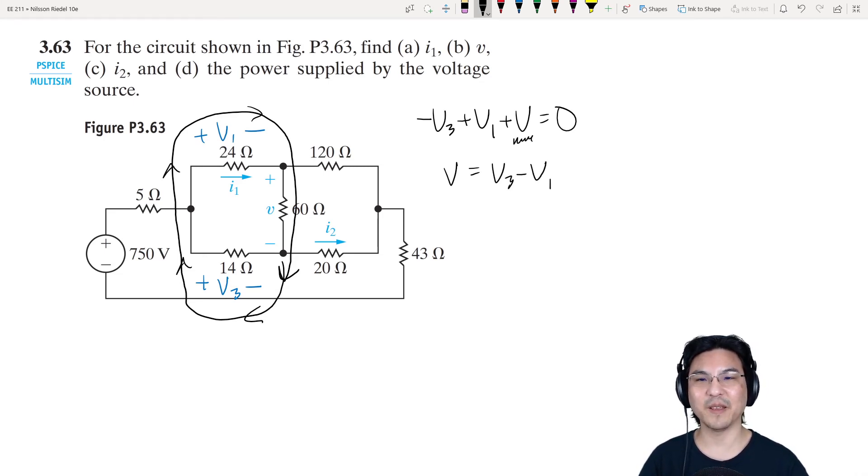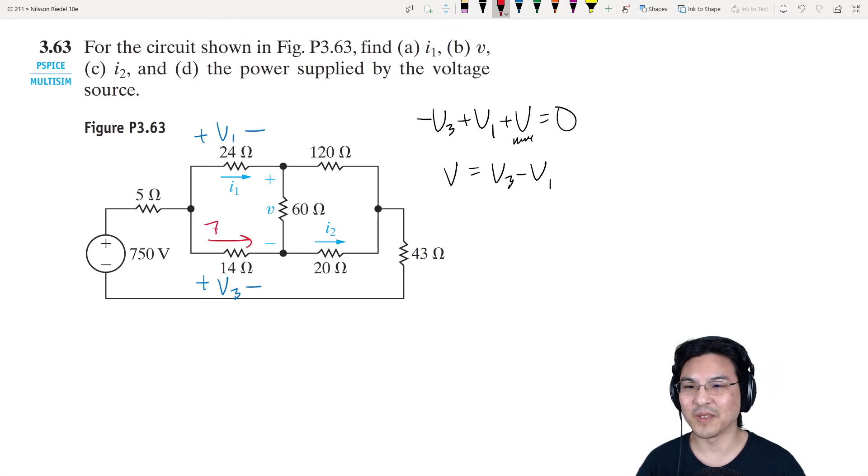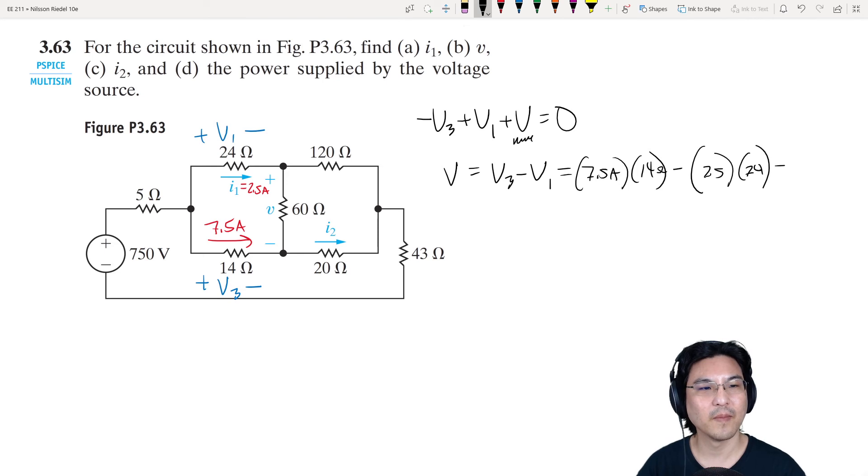Can we get V3? Yes, from Ohm's law, because we know the current already. The current here we just solved earlier was 7.5 amps. The current I1 is 2.5 amps. So what is V3? The voltage is positive this way, the current is positive this way, so V equals positive IR. 7.5 amps, 14 ohms. And V1, voltage is positive this way, current is positive this way, so V equals positive IR. So 2.5 amps, 24 ohms. Punch in the calculator. 45 volts. So we got this is 45 volts.